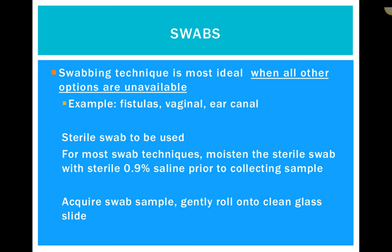A sterile swab is typically used for culture and sensitivity; otherwise we use any clean swab. For swab techniques involving moist tissue — such as fistulas, eyes, or vaginal swabs — always moisten the swab with 0.9% saline prior to collecting. If it's a regularly dry area like a moist ear, we typically use a regular dry swab, because we're dealing with wax and it sticks better. The reason we use saline is so that we don't rupture the cells — swabs are very invasive to cells and easily rupture them with pressure. Moistening is also more comfortable for the animal.